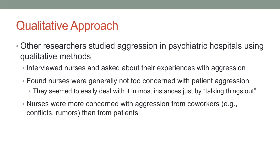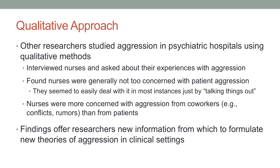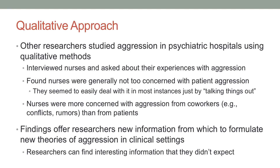What they found kind of surprised them. The nurses generally weren't all that concerned with the patients' aggression — in fact, they said usually they could handle patients just by talking things out. What they were more concerned with was aggression from co-workers, especially other nurses. They often had to deal with conflicts, people spreading rumors about them, and this caused a lot more stress than having to deal with the patients. So what's great about a qualitative approach is that sometimes it helps you to formulate all new theories — in this case, researchers discovered a whole new area of research around aggression between co-workers in psychiatric institutions.